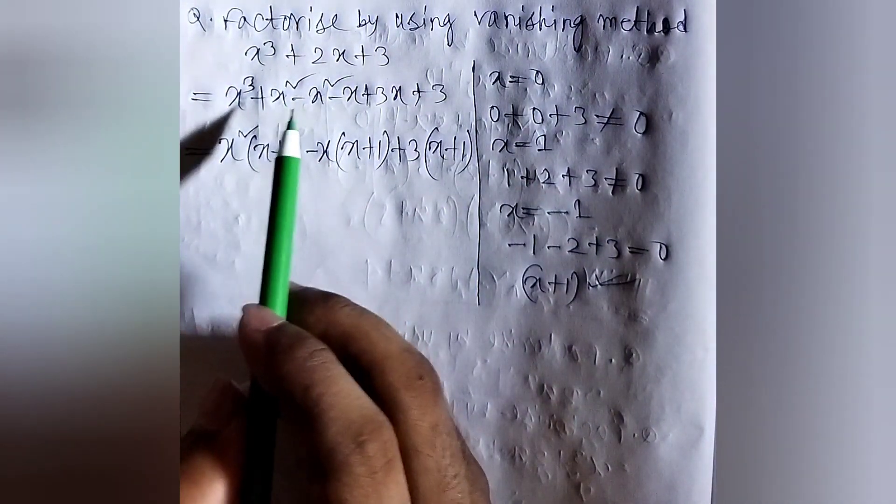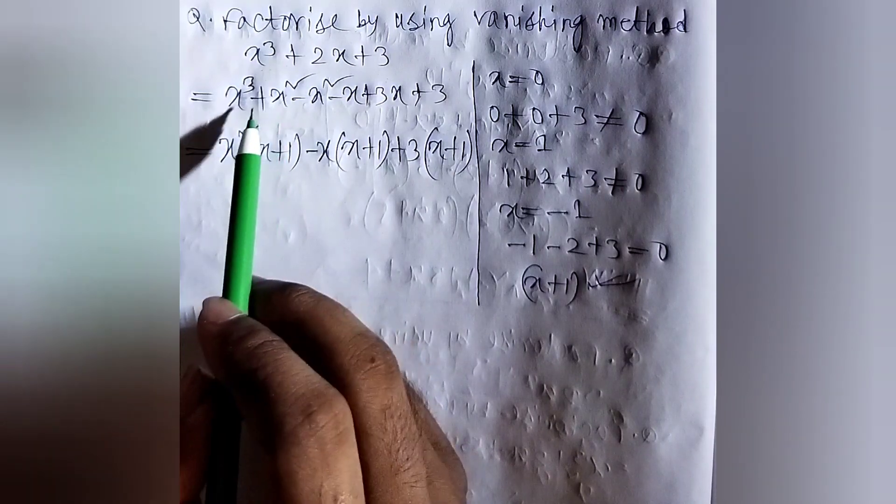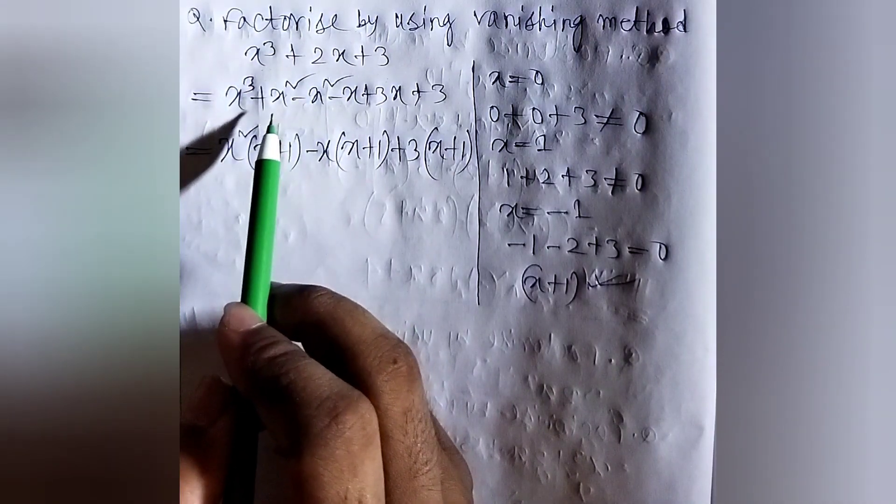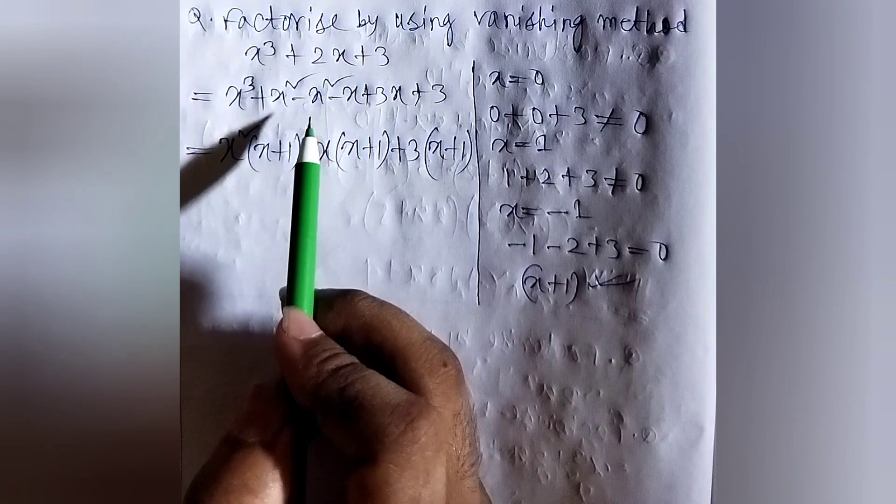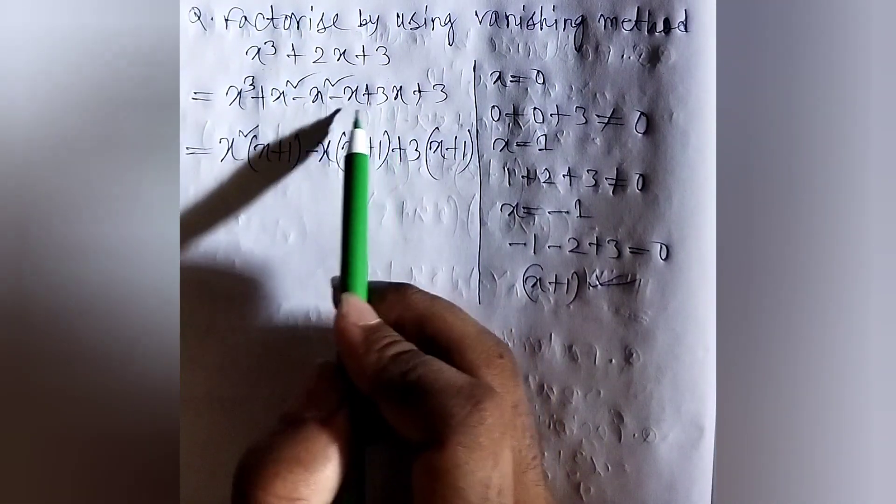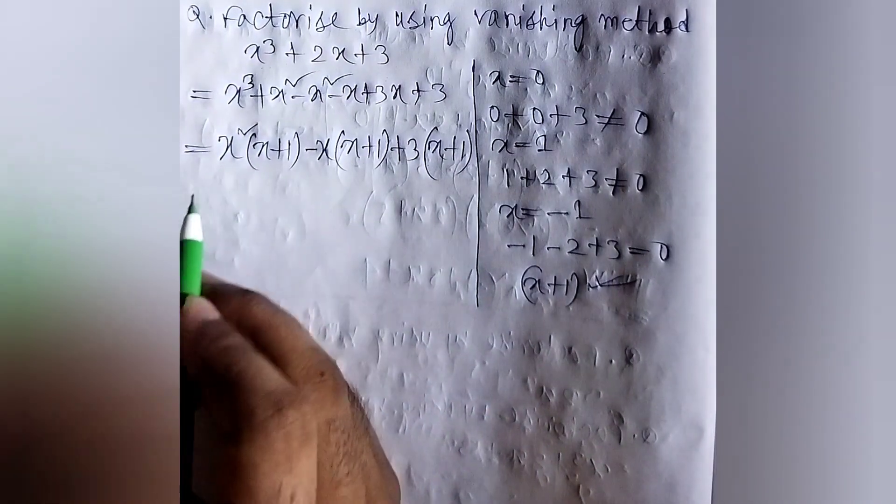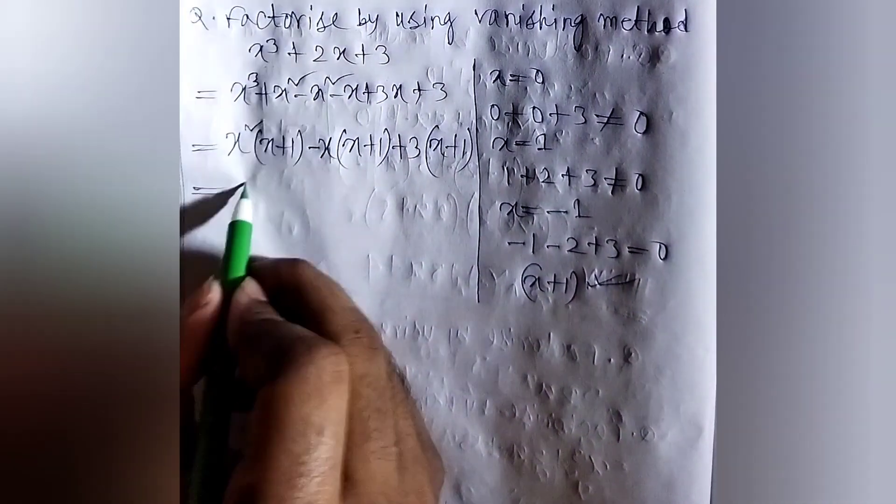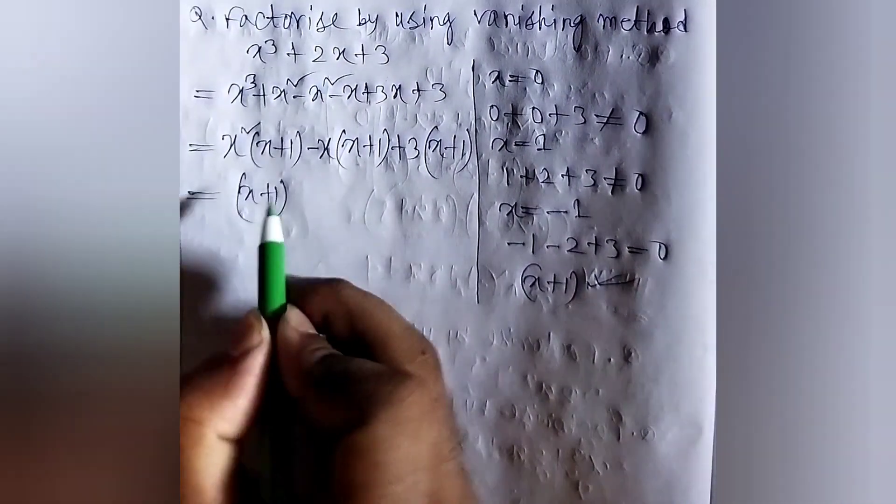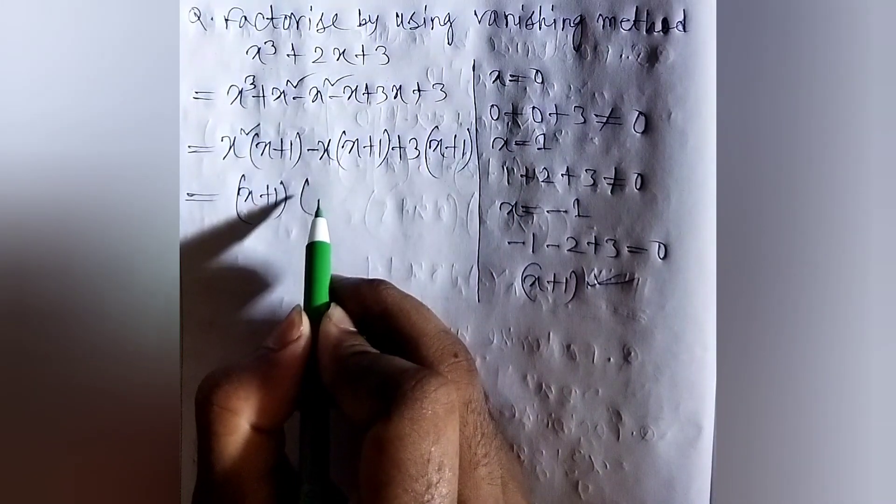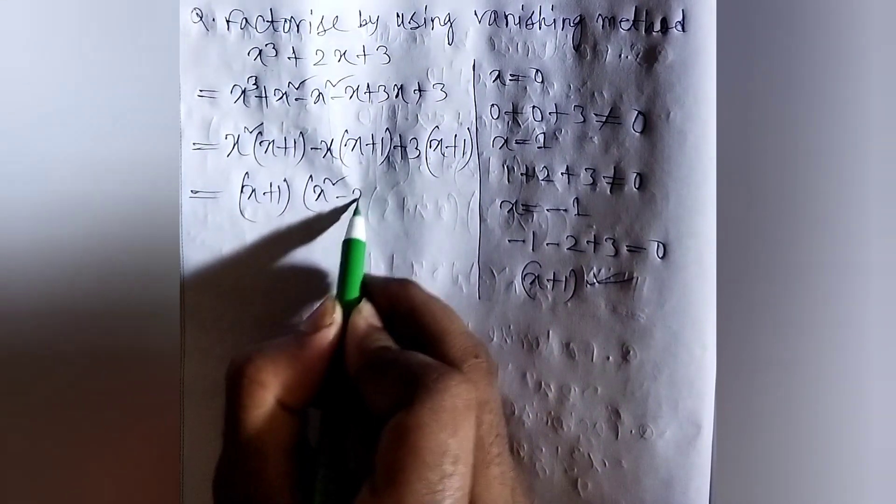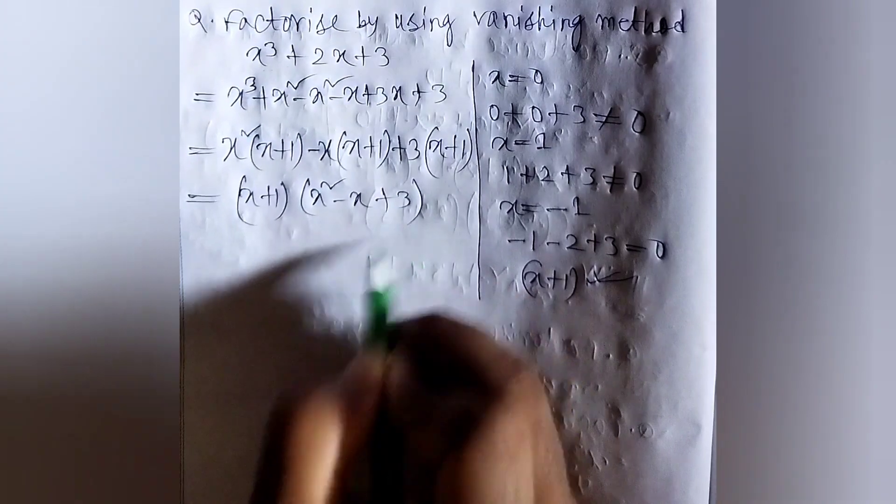So, we can go back from this line to this line. Plus x squared minus x squared will be eliminated. Minus x plus 3x, so it will become 2x plus 3. This is x cube. Now, if you take x plus 1 as common, then x squared minus x plus 3 remains.